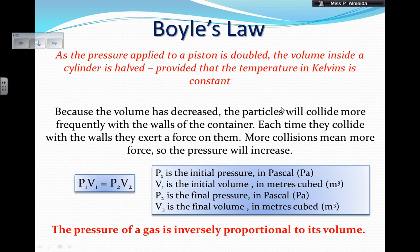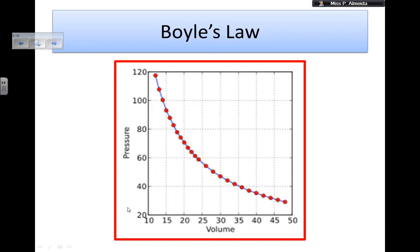This is the formula. The initial pressure in Pascal times the initial volume in meters cubed equal to the final pressure in Pascal times the final volume in meters cubed. This means that the pressure of a gas is inversely proportional to its volume, and this is how it looks like if you make a graph.